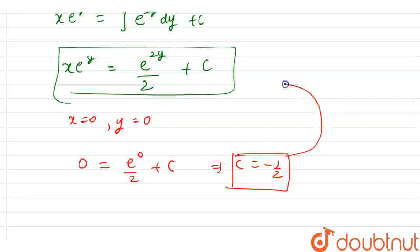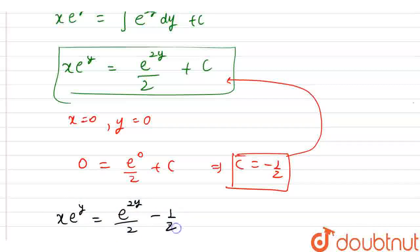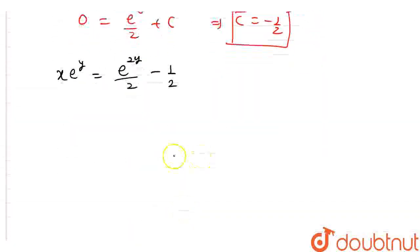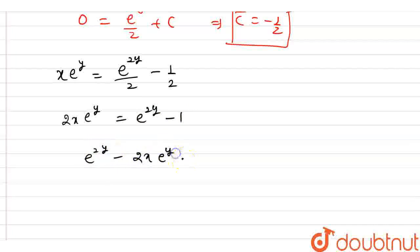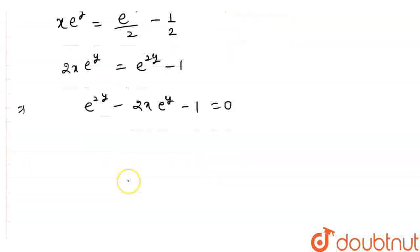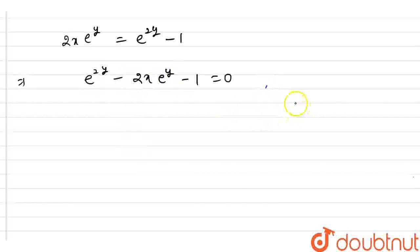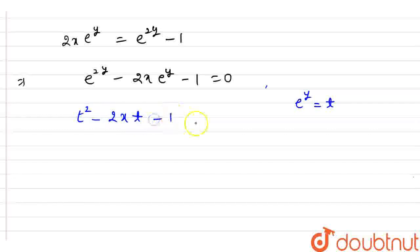My c is minus 1 over 2. Putting this back in the equation, it will look like: x times e raised to the power of y equals e raised to the power of 2y over 2 minus 1 over 2. Multiplying through by 2: 2x times e raised to the power of y equals e raised to the power of 2y minus 1. Rearranging: e raised to the power of 2y minus 2x times e raised to the power of y minus 1 equals 0. This looks like a quadratic equation. Letting t equal e raised to the power of y: t squared minus 2xt minus 1 equals 0.